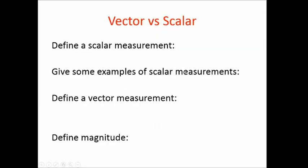A scalar measurement would be 2 meters, 7 meters, 6 degrees — all these things that don't really have a direction. Vectors, as you know, have both a scalar — a number — and a direction. We call the number part the magnitude. So that would be like 5 meters north — you need the meters, that's the unit, but north makes it a vector. You can go forwards or backwards; sometimes a velocity will be positive or negative, and so that would be a vector because there's a plus way and a minus way.